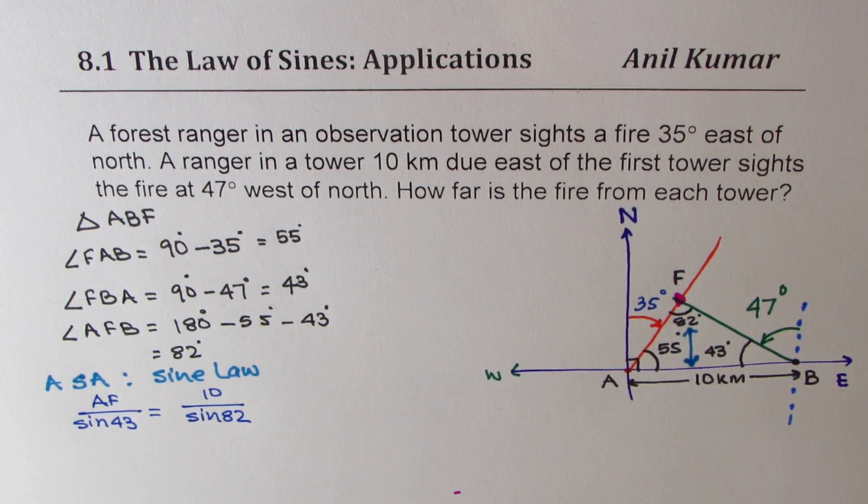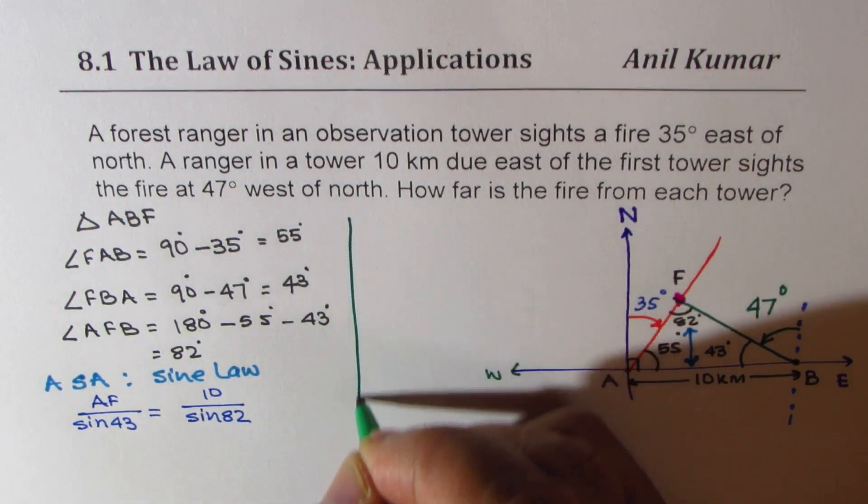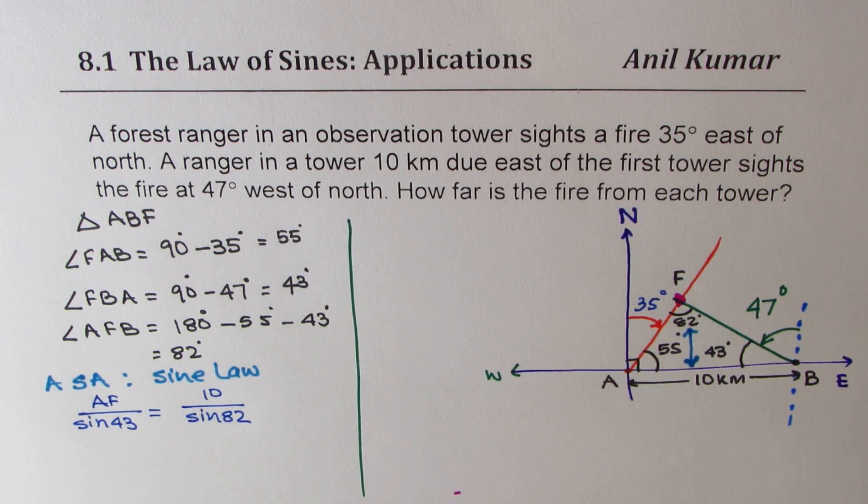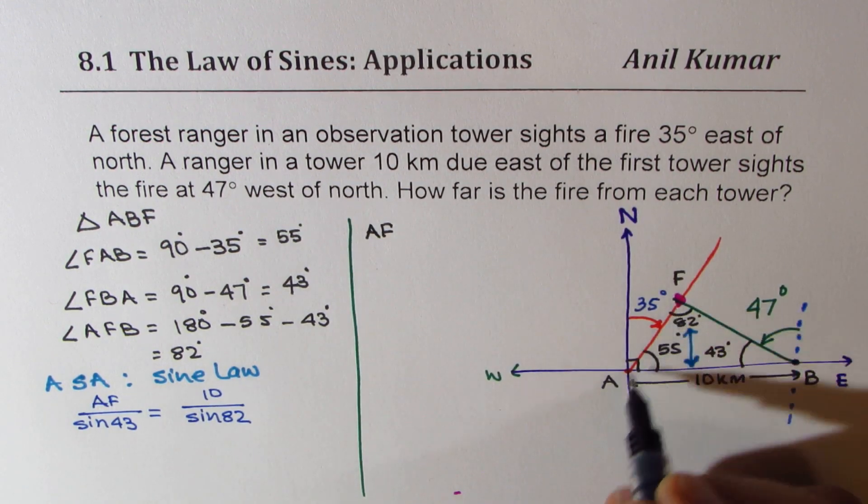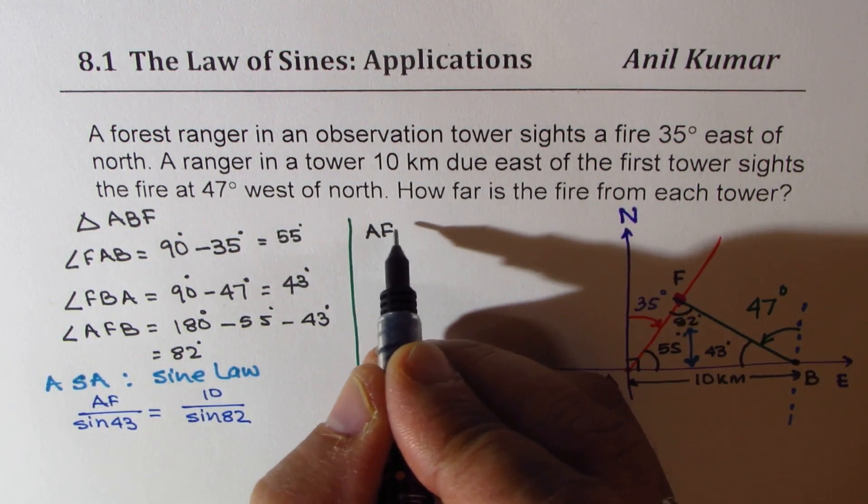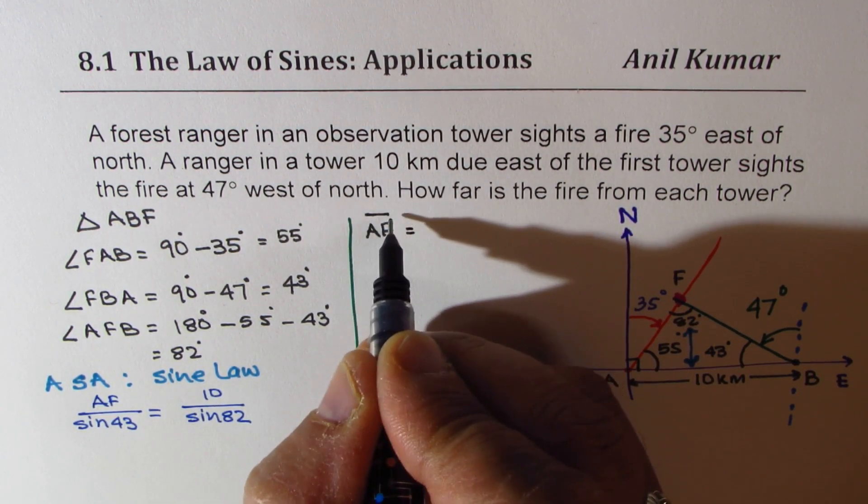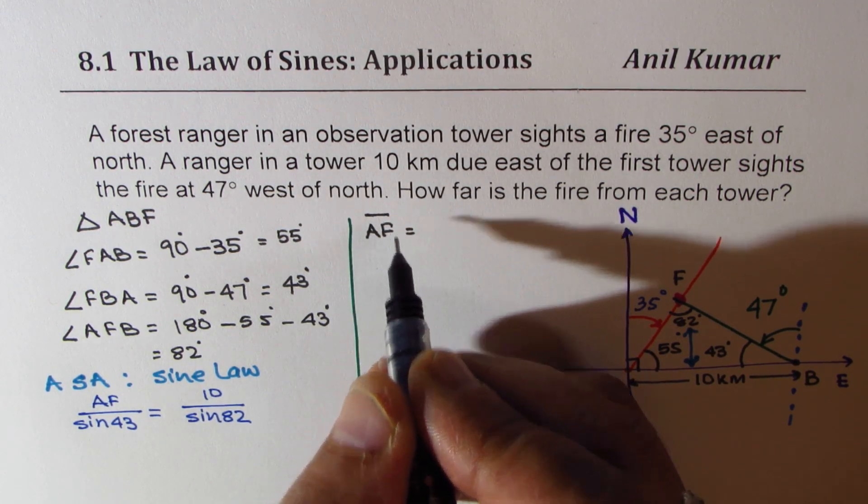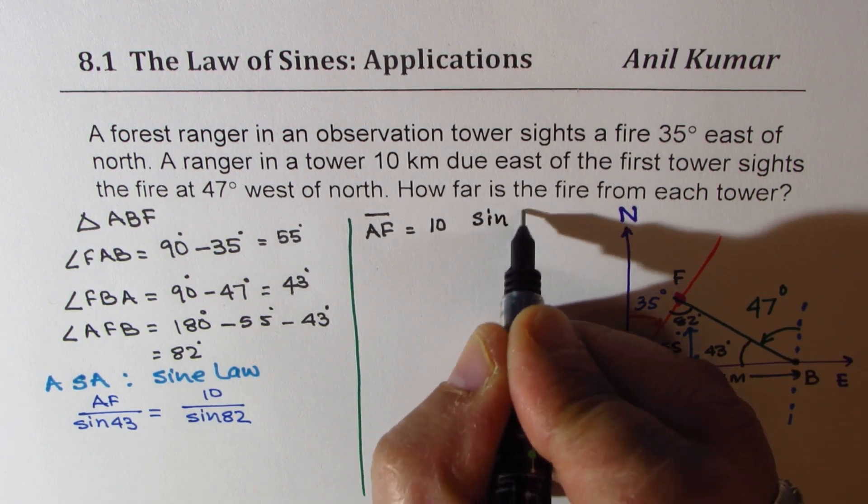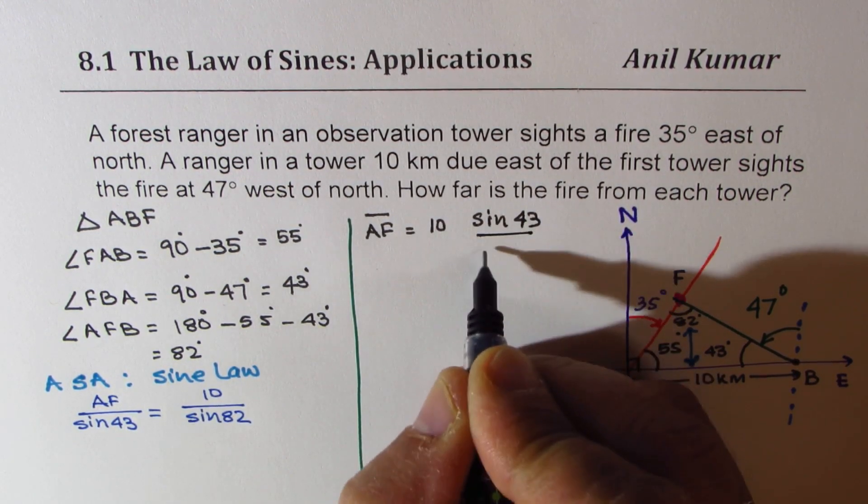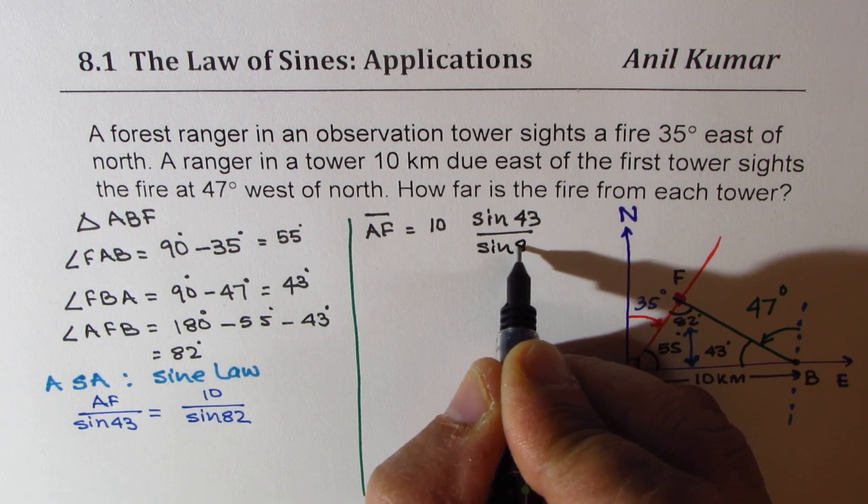So we know one side and the other one we'll calculate it here. So from here we can find what AF is. So the distance from the first tower is AF. AF is 10 times sine of 43 divided by sine of 82.